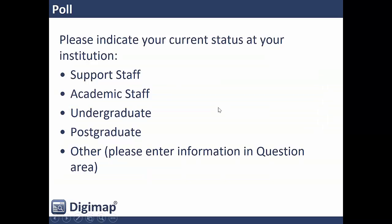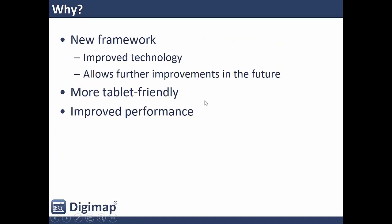You may have noticed we now have a new Roam — it is now the top entry in the Digimap interface. Why did we do it? We wanted to move to a new framework with the most up-to-date technology so that when we come to make advancements in the future we can do this without having to start again. It's a much more tablet-friendly interface — rather than clicking and dragging, it's more click once and then click again, which means it can be used easily on mobile devices. There have also been big improvements in performance and responsiveness, particularly when customizing.